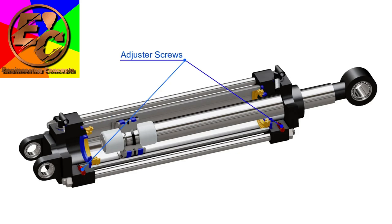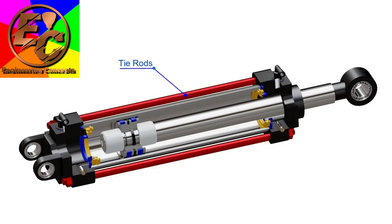Captive adjustable cushioning screws are installed on each end. These screws enable the user to adjust the optimum cushioning at the end of the stroke. This whole assembly is held together with tie rods, which also provide compressive and tensile strength to the actuator.